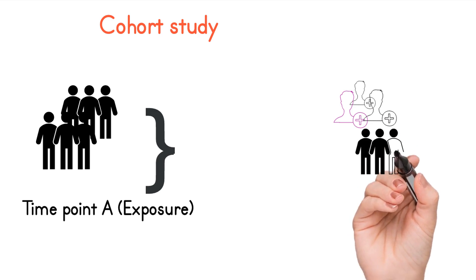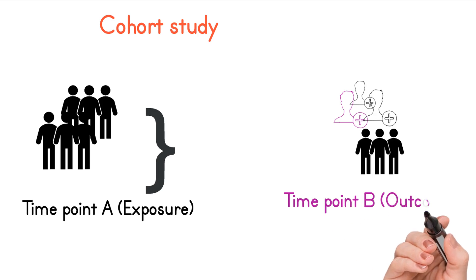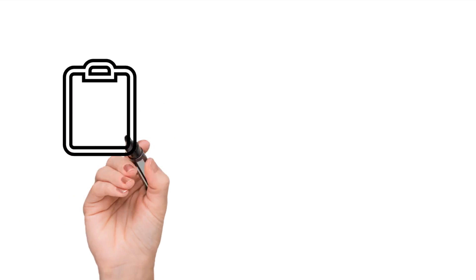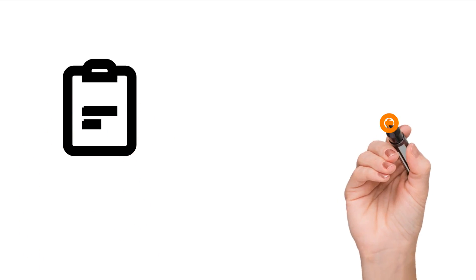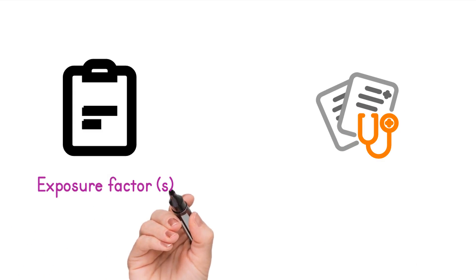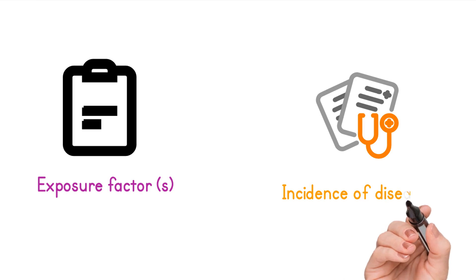Here, patients don't have disease or outcome at the beginning of follow-up period. Exposure to one or more factors that is thought to influence disease occurrence is recorded. Incidents or occurrence of one or more outcomes is also recorded.